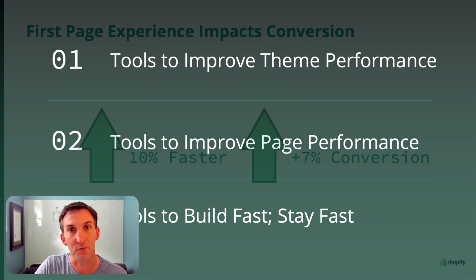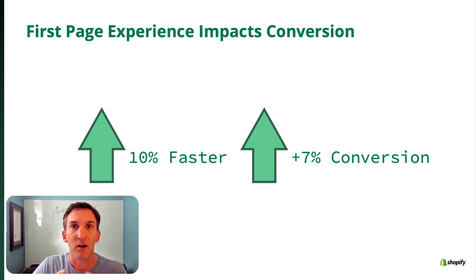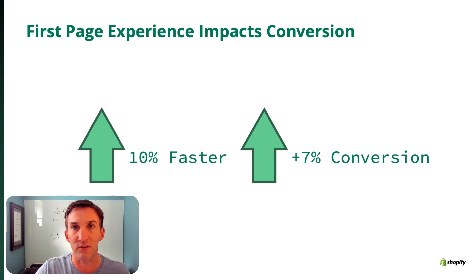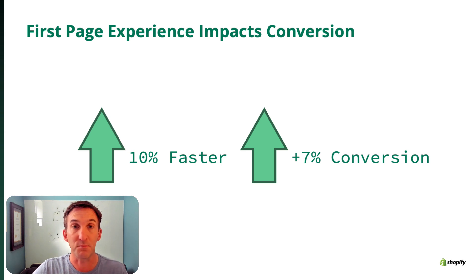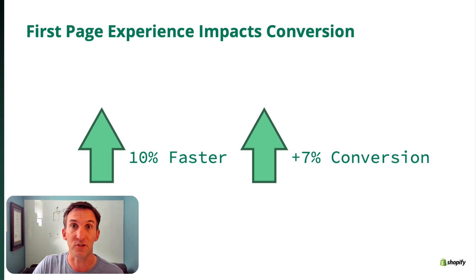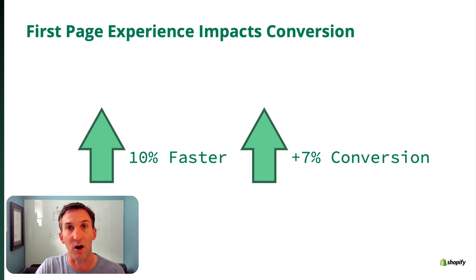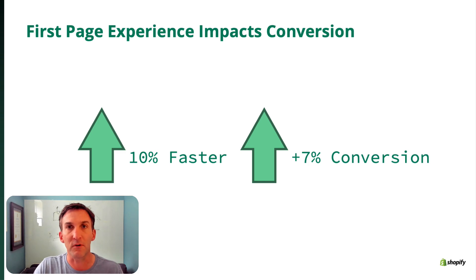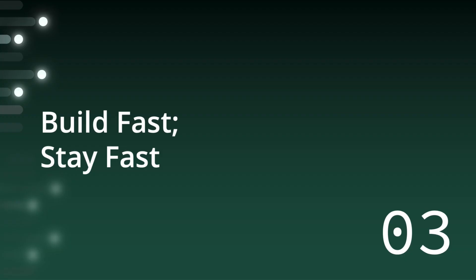Page performance — that first experience a buyer sees — directly correlates to conversion. A 10% increase in page speed leads to a 7% increase in conversion on average. This is such an important aspect of all of our sites, so I want to talk about how we build fast and then stay fast.